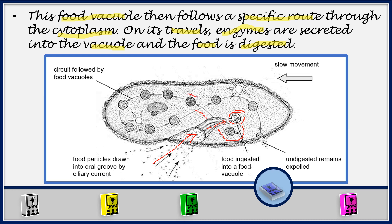Now when the food vacuole is in the cytoplasm, enzymes are going to be secreted into the food vacuole from the cytoplasm. Those enzymes secreted into the food vacuole are going to start digesting the food inside it as the food vacuole moves through the cytoplasm of the Paramecium.